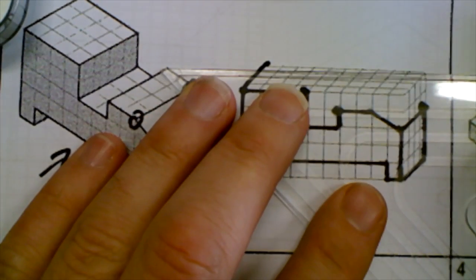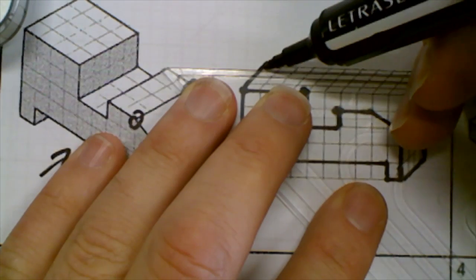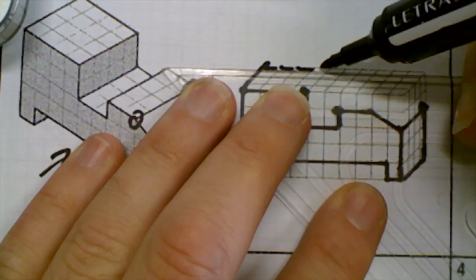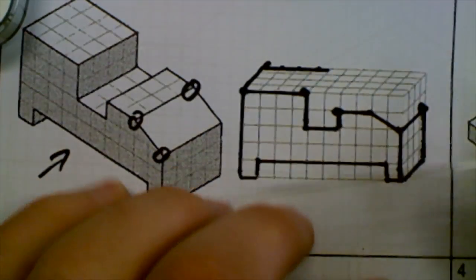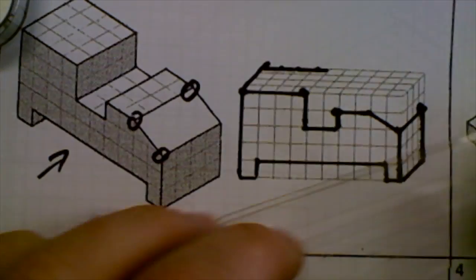So I'm going to draw that. One, two, three, four blocks across. And then one, two, three, four blocks down to finish the square.